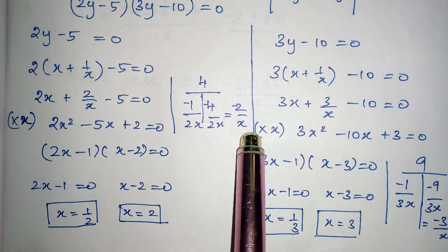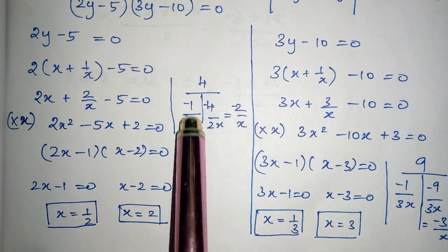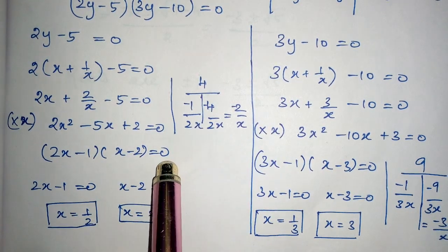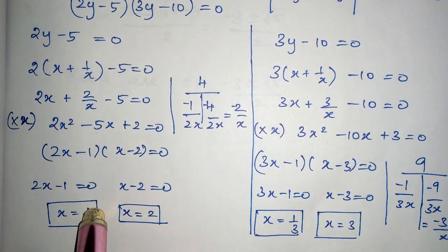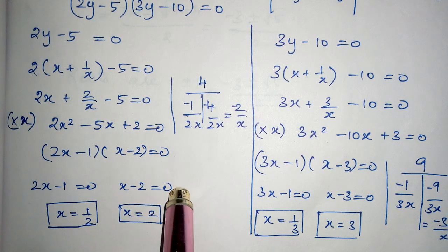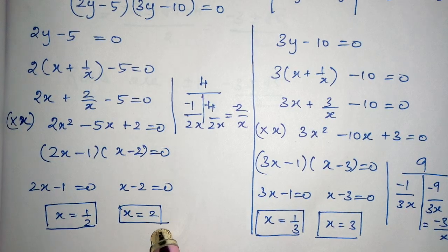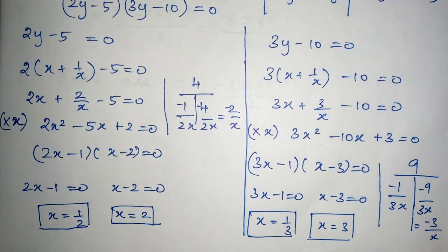Using T method, 2 × 2 is 4: -1, -4 divided by 2x. On cancelling, -2/x. So (2x - 1)(x - 2) = 0. 2x - 1 = 0, x = 1/2, and x - 2 = 0, x = 2. So 2 values.